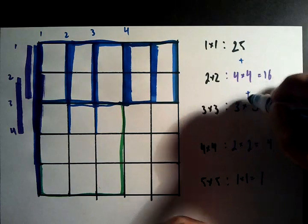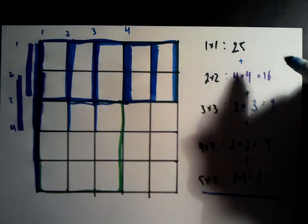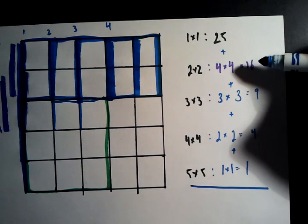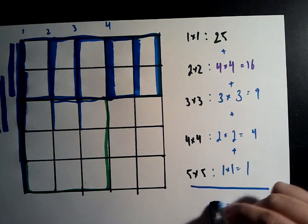So if we just add up all of these, we should get the total number of squares. So we can just do this. 25 and 16 comes out to 41, 50, 54, 55. So there's 55 squares.